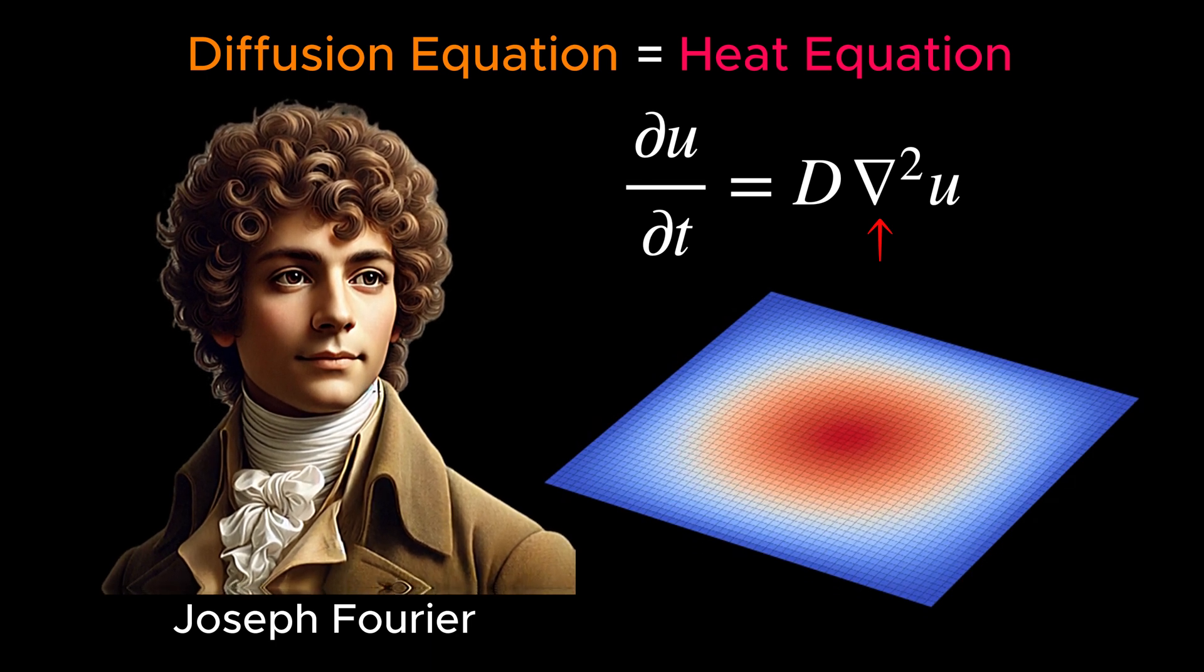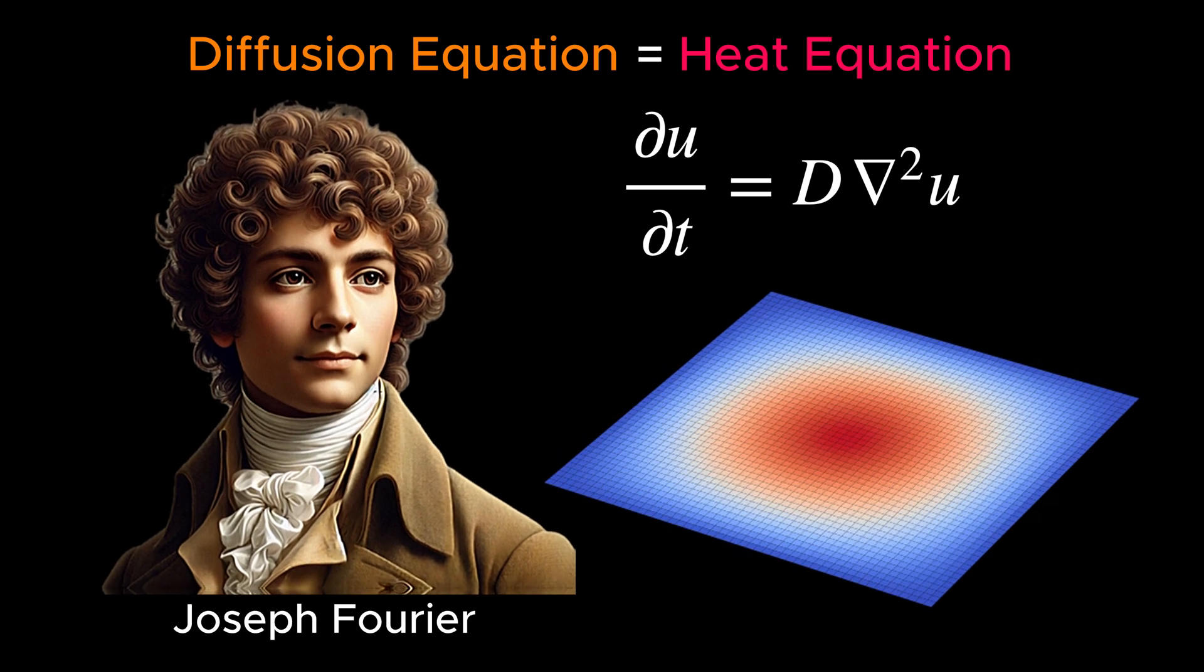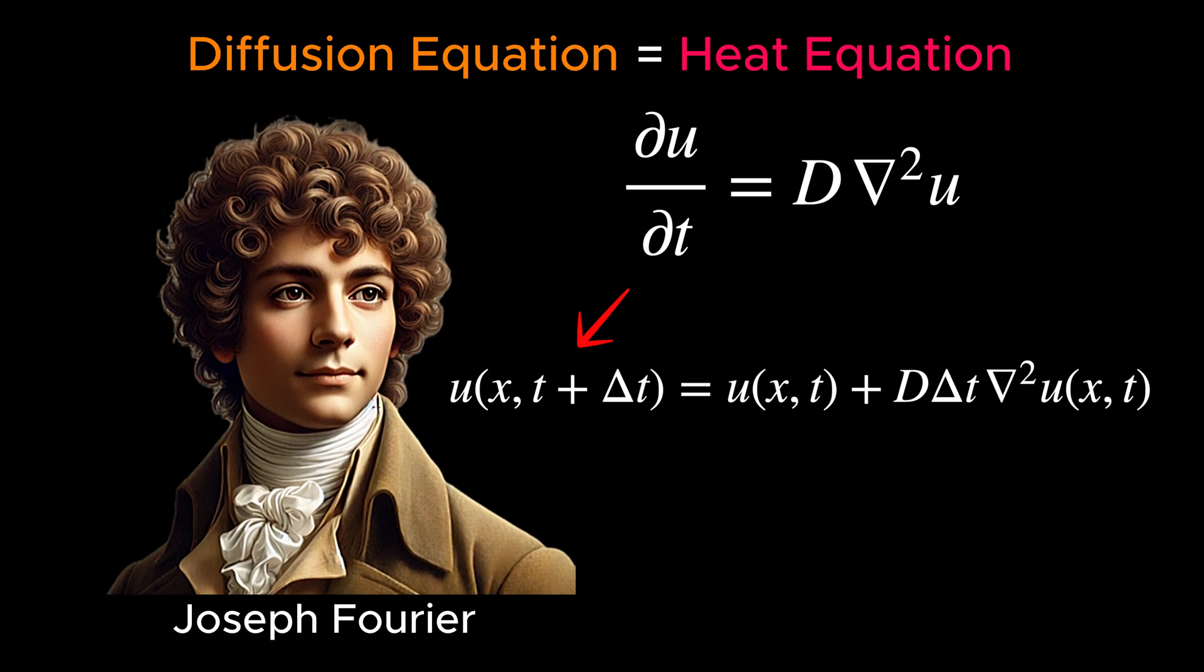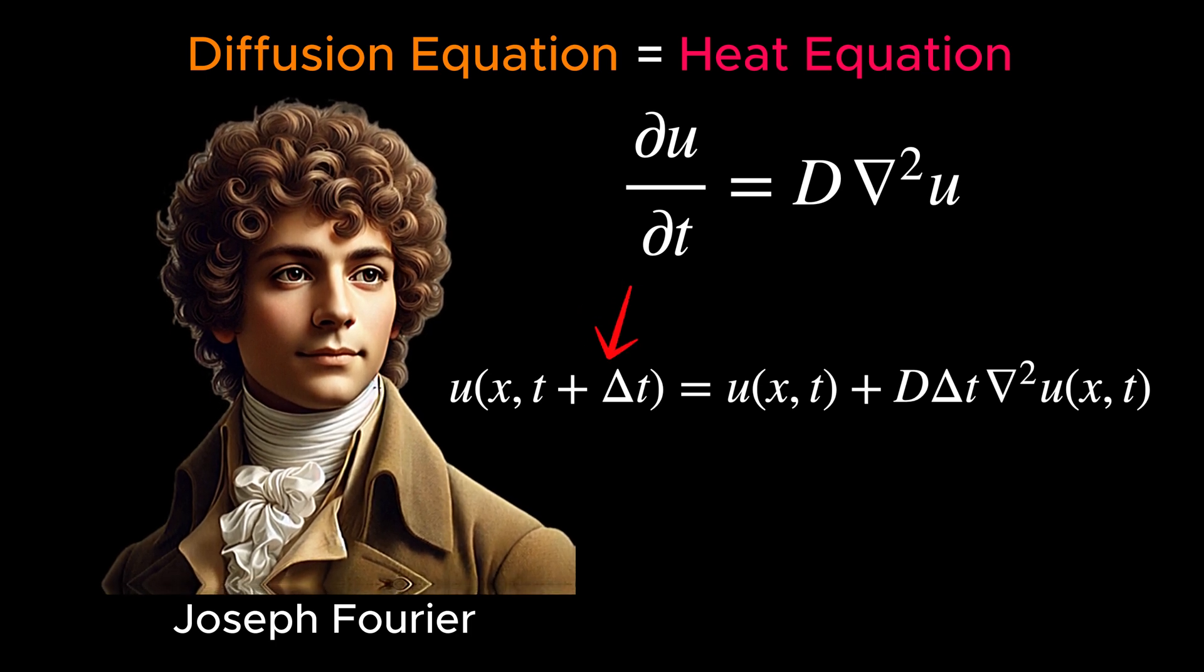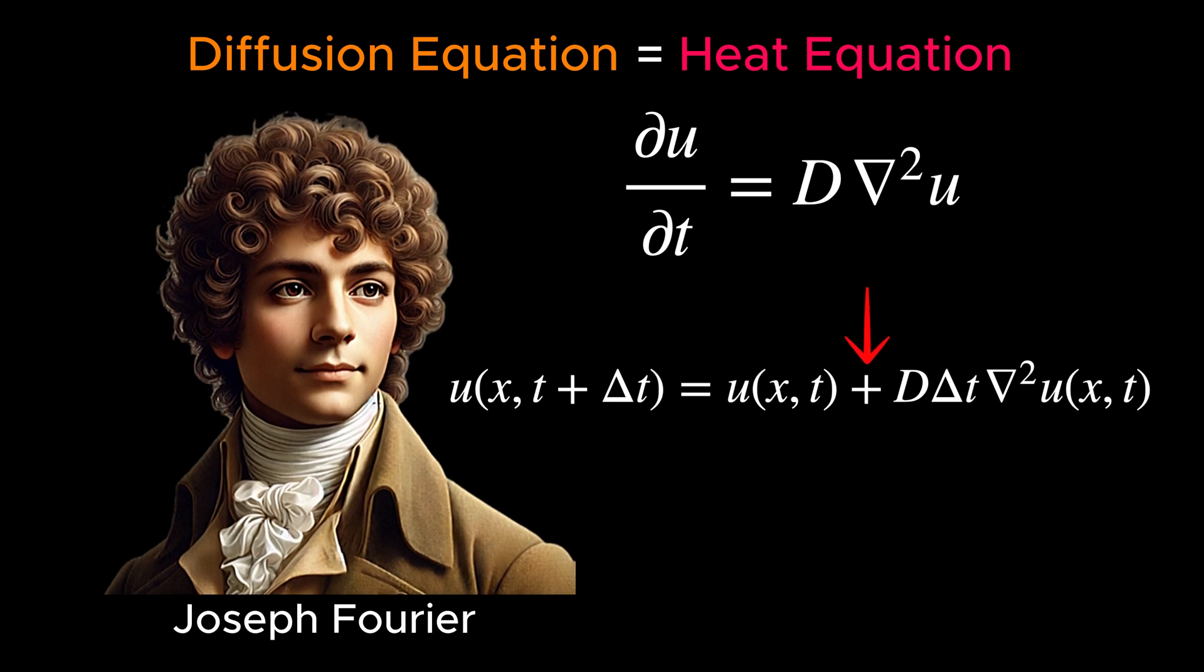and ∇² is the Laplacian operator, representing the spatial distribution of the substance. To see the Markovian nature of this equation, one can discretize the time derivative. As you can see in this version, the quantity of interest at the next time depends on its value at present, plus a transition term.